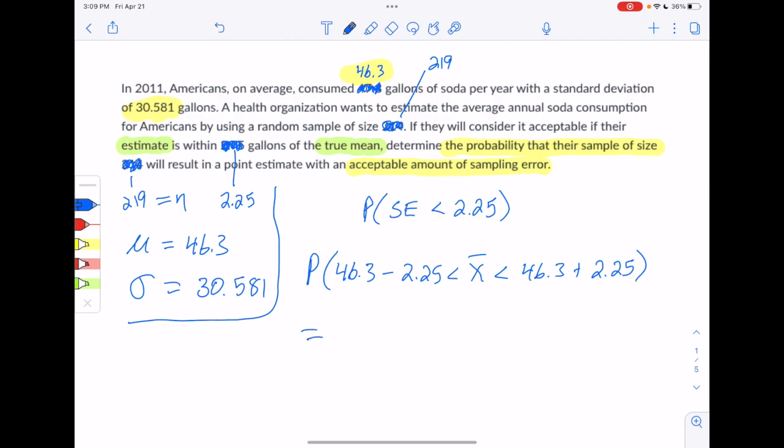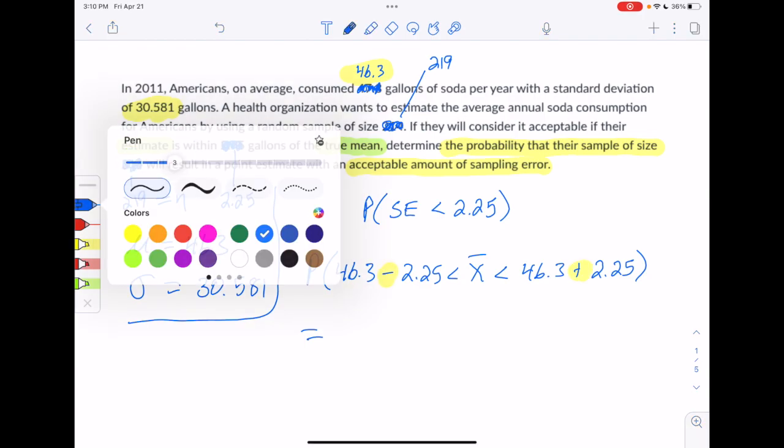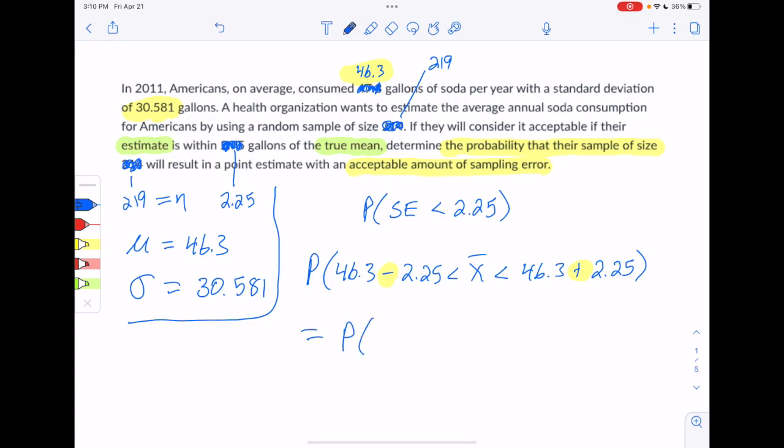And if you just do the subtraction and the addition, then you can simplify this a little bit. And you end up with the probability that 44.05 is less than x bar is less than 48.55. So we want to do this probability question right here.